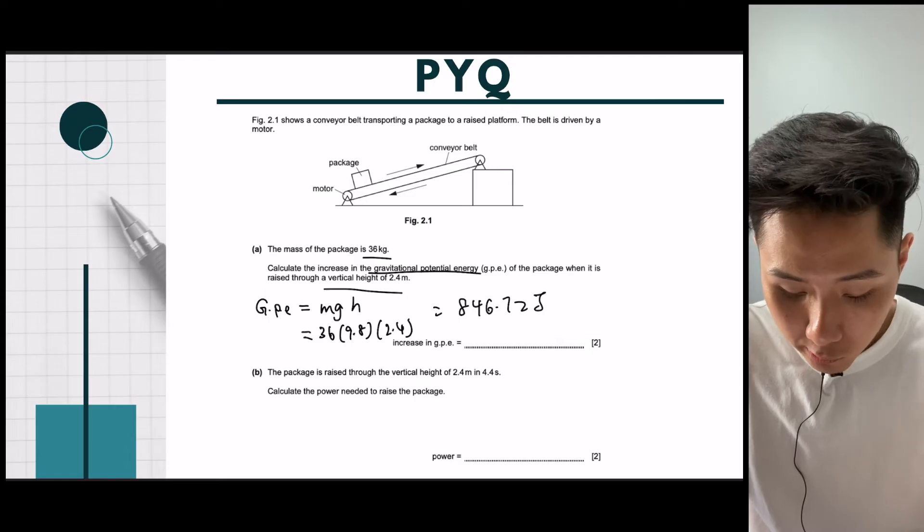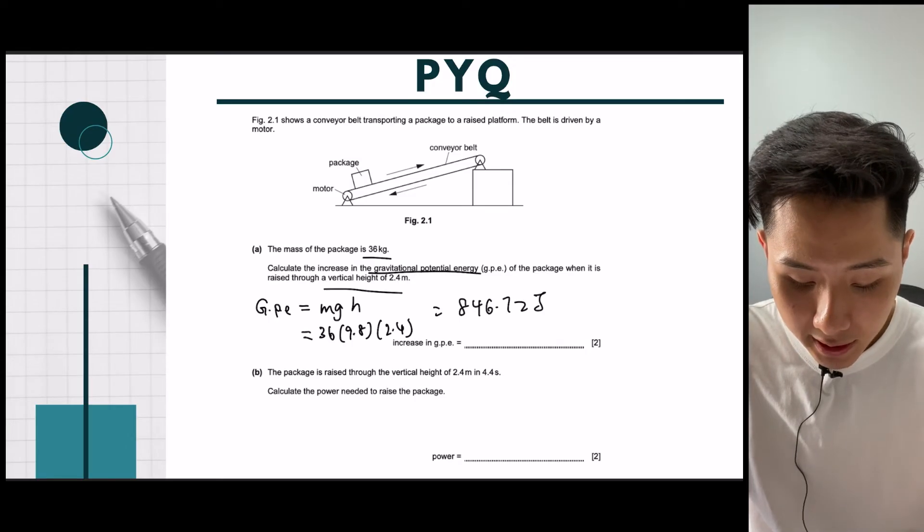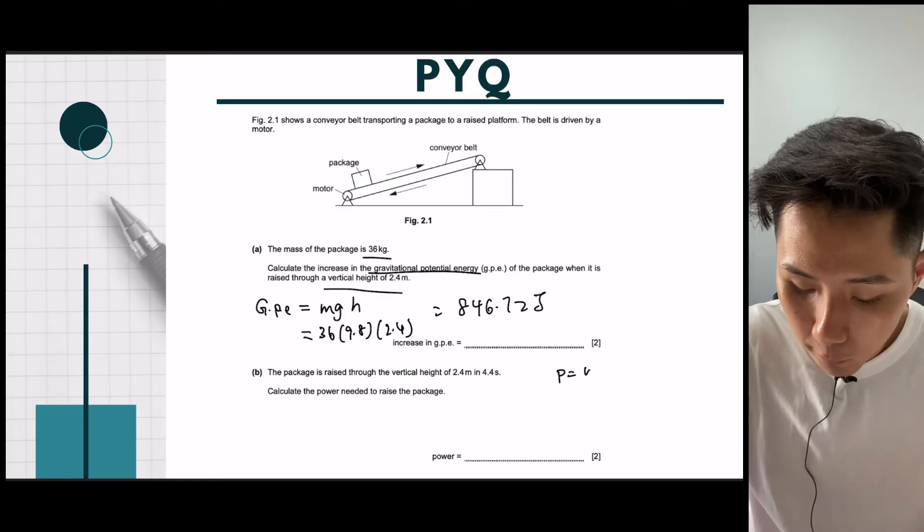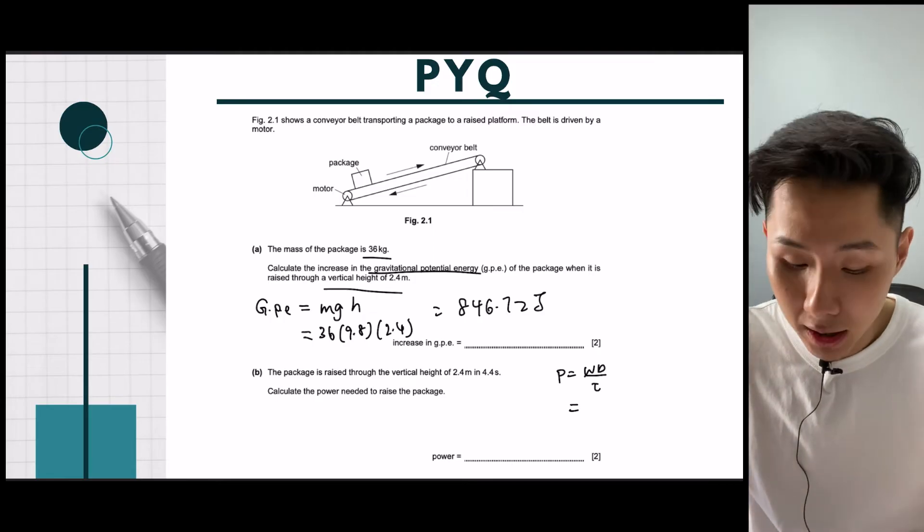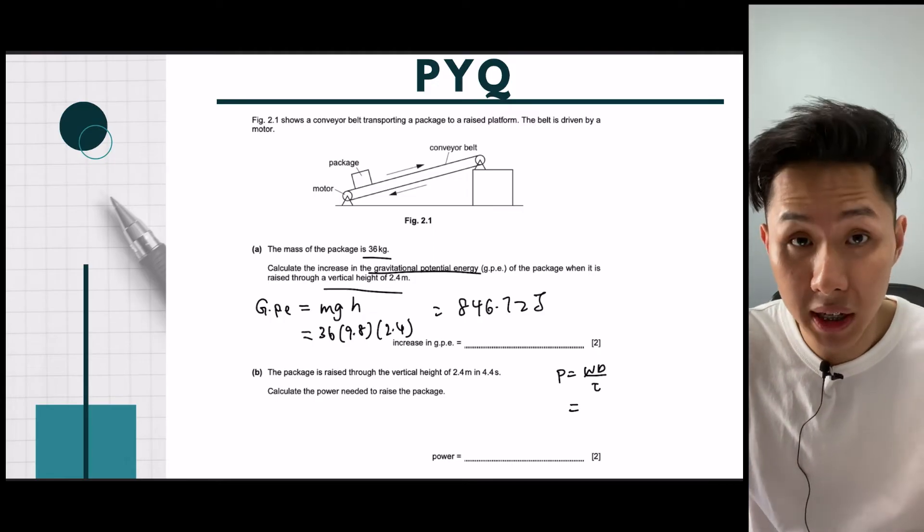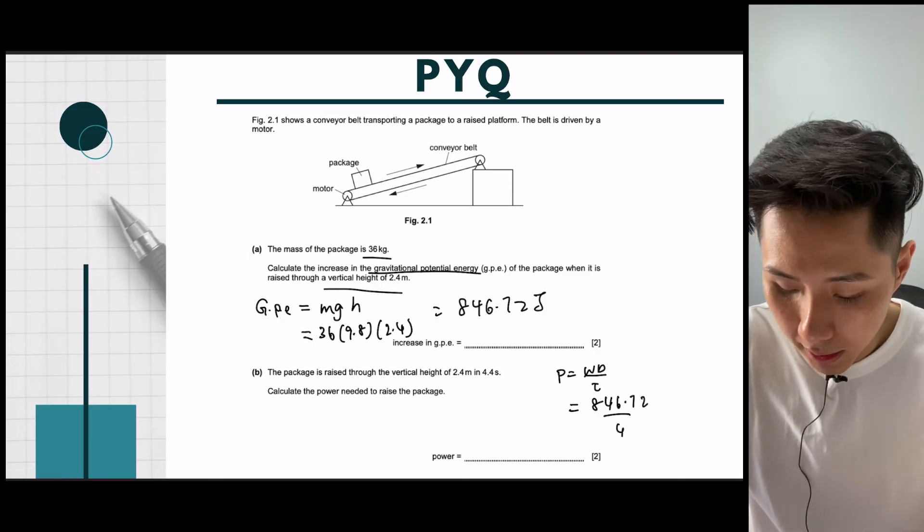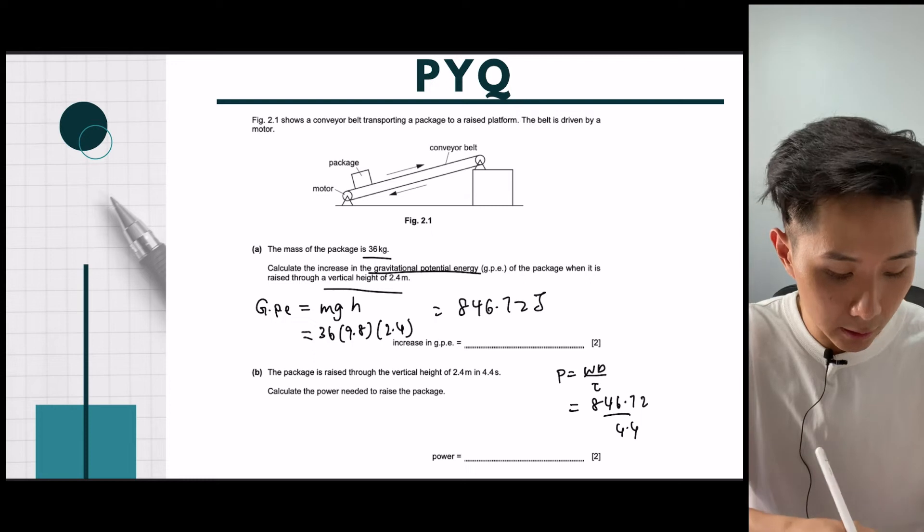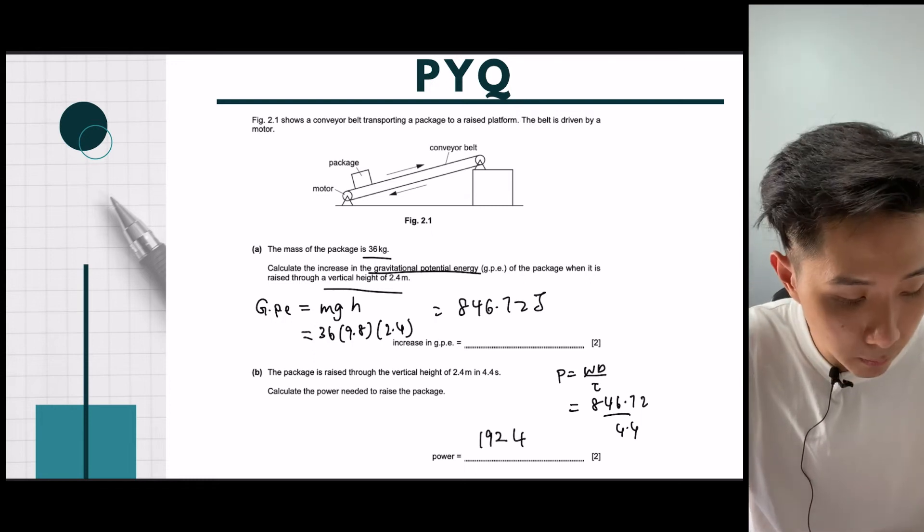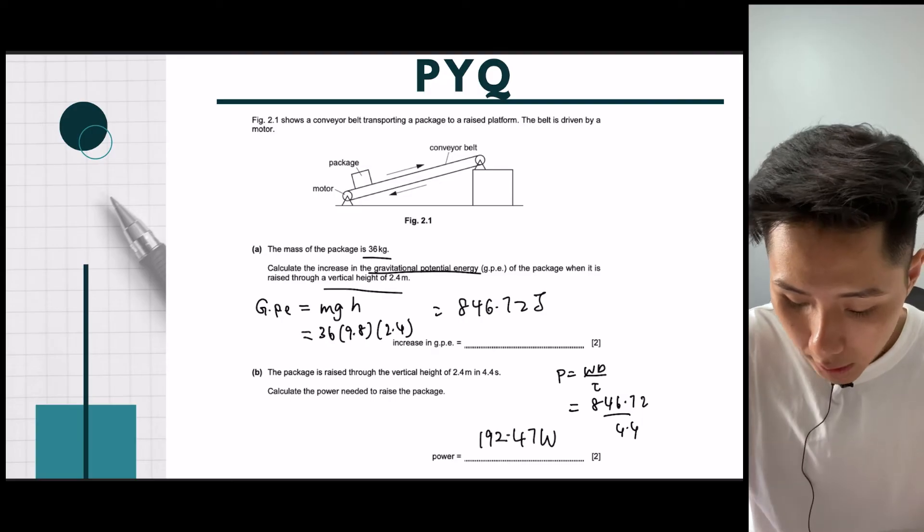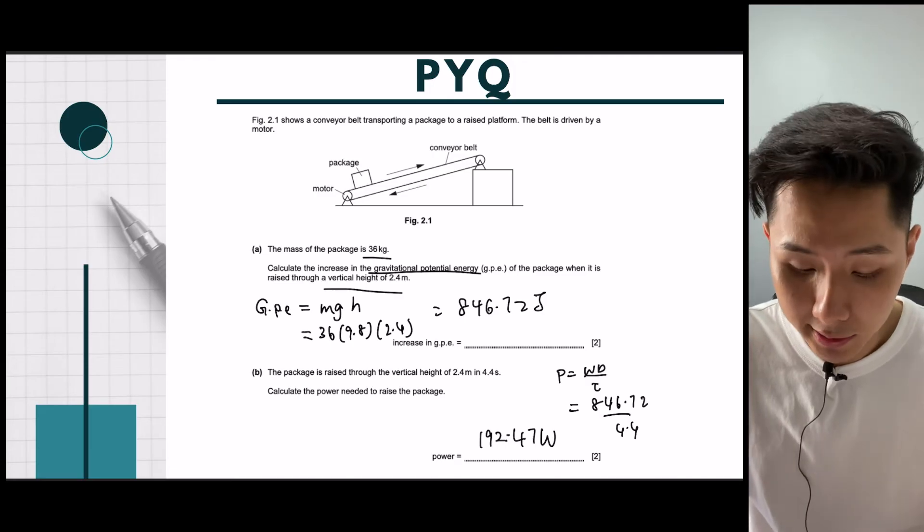So next one, the package is raised to the vertical height of 2.4 meter in 4.4 seconds. Power. So power is work done divided by time. Work done is the amount of energy transfer. So it's the GPE that we calculated. I'm just going to sub that value into my work done divided by 4.4. So when I do that, I put that in the calculator, I got 192.47 watts. Of course, you can put your answer in three significant figures, but I'm just going to leave my answers as of now.